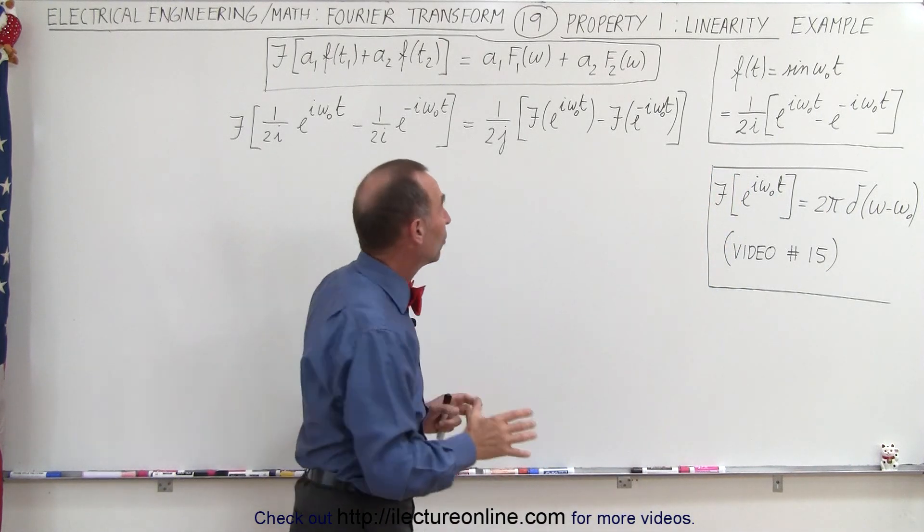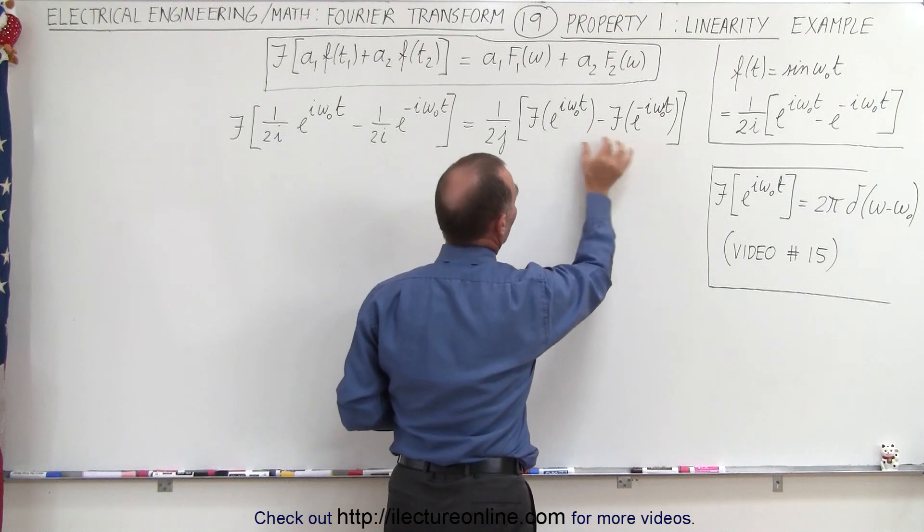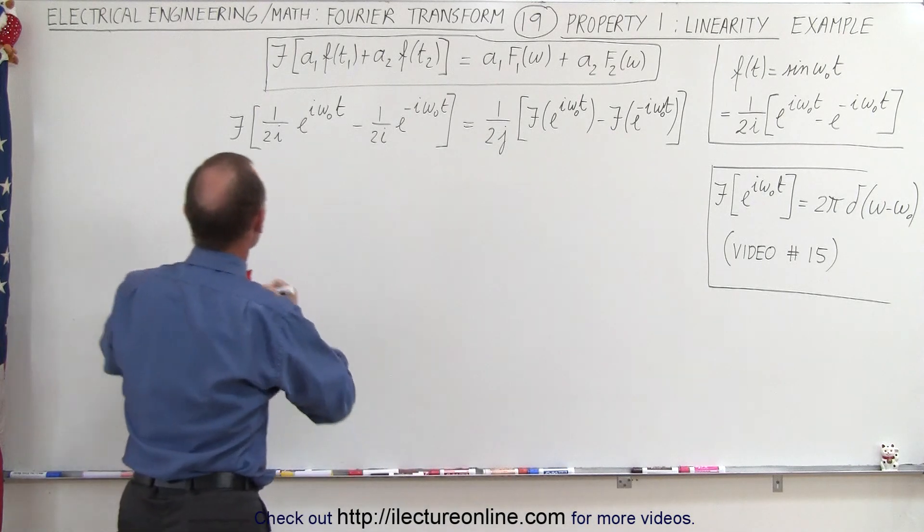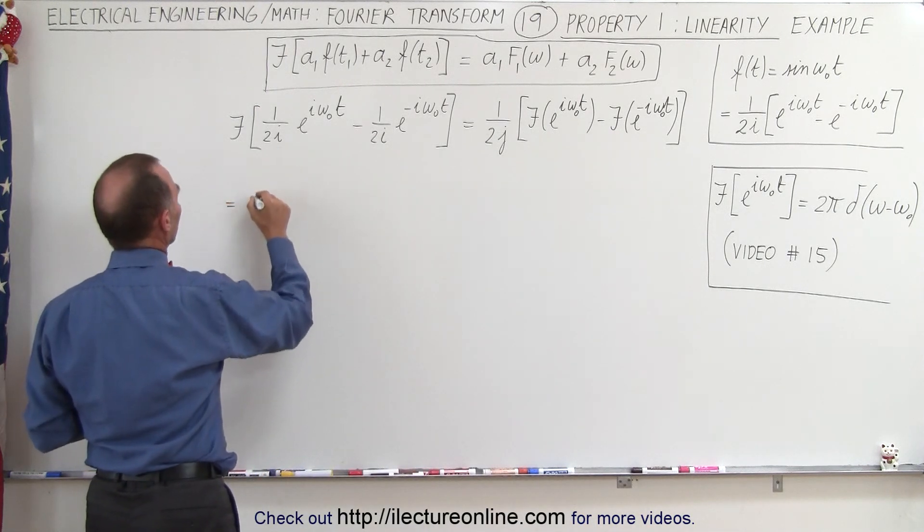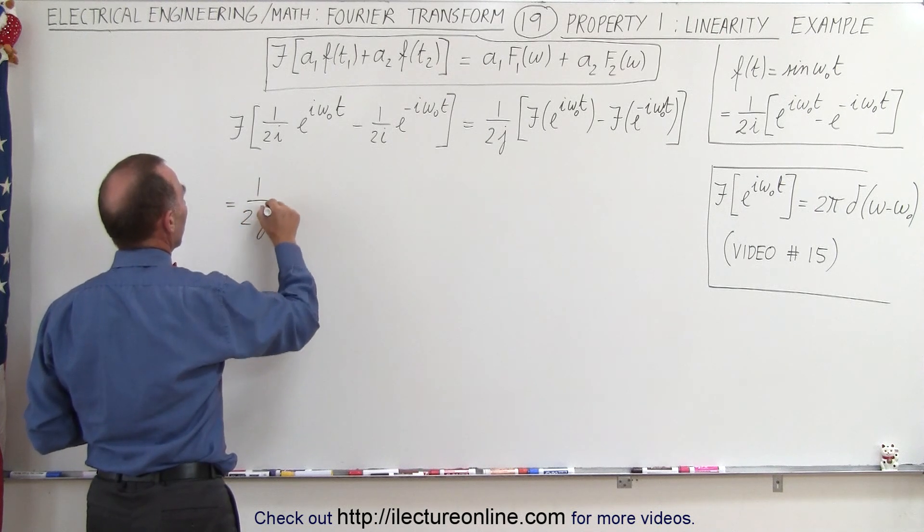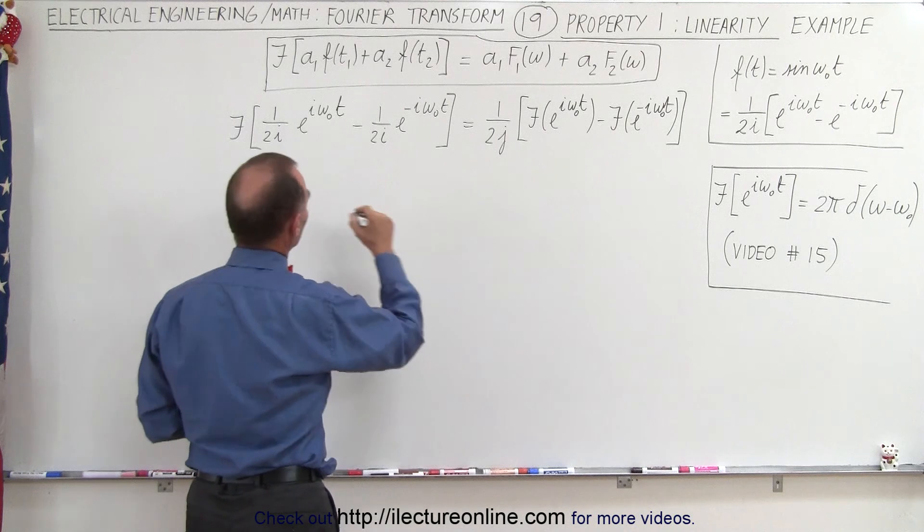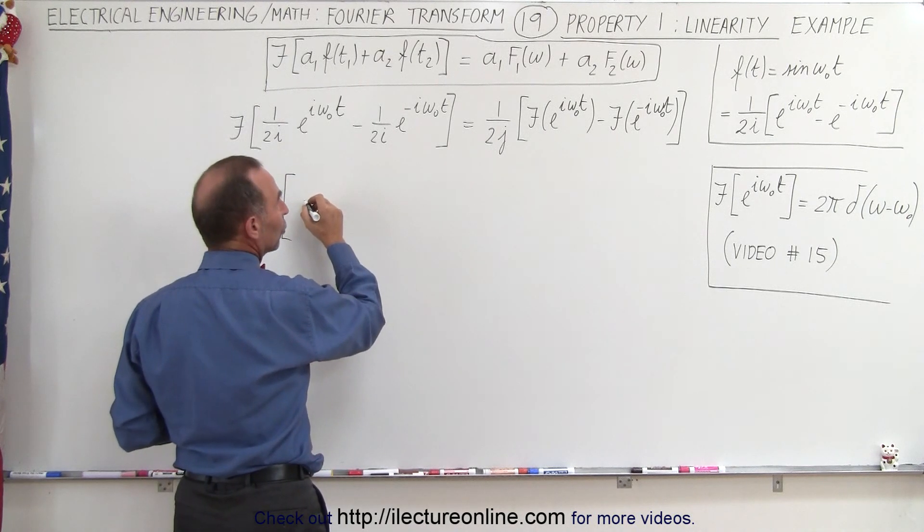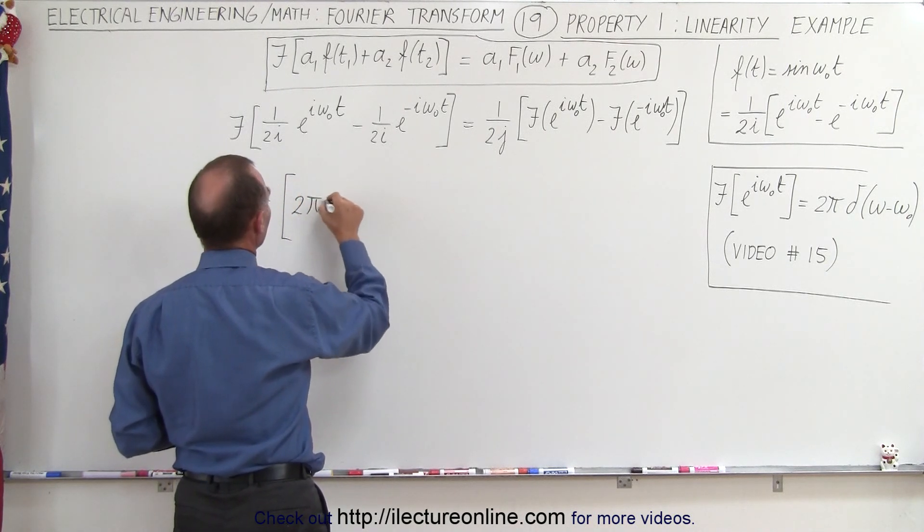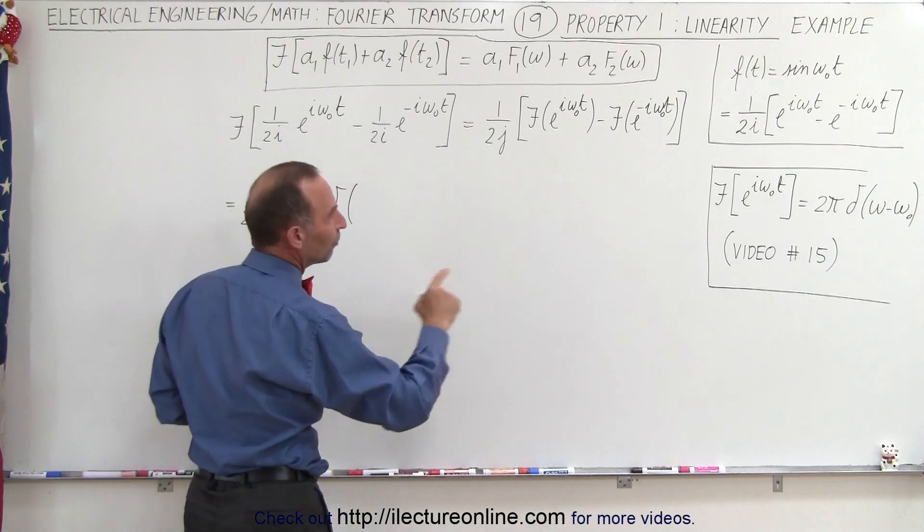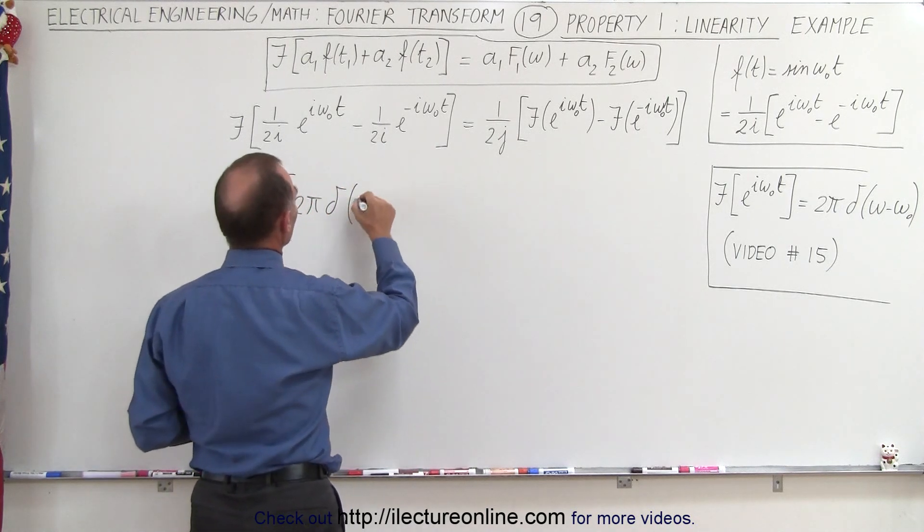Applying that, we can easily find the Fourier transform of each of these two. This becomes equal to 1 over 2j times, and when we take the Fourier transform of the first input function, we get 2 pi times the delta function of omega minus omega naught.